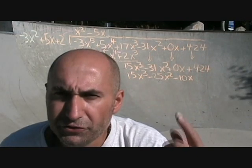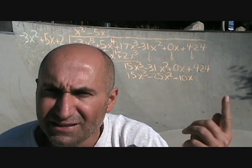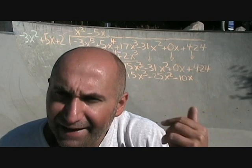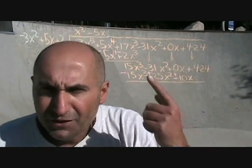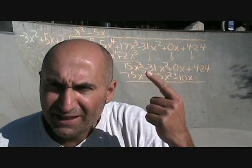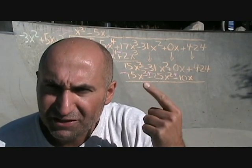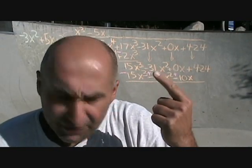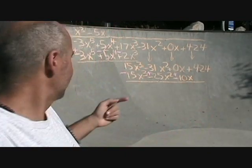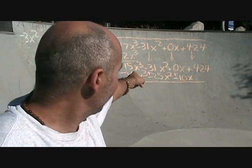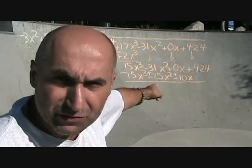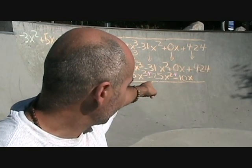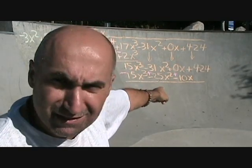Now we change all the signs and add them. 15x³ minus 15x³ — these cancel each other. Negative 31x² plus 25x² is going to be negative 6x².